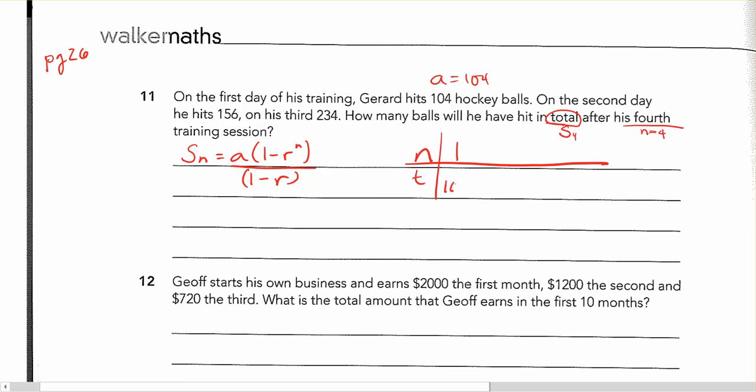My first term was 104. My second term was 156. My third term was 234. And the fourth term, well, I'm not sure what that is yet.